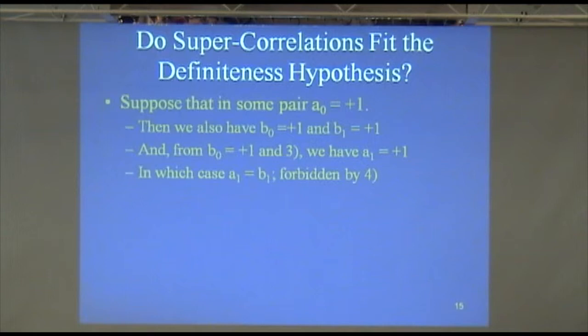If definiteness is true, it's got either the plus 1 or minus 1 value, so suppose it's plus 1. Well then, that means Bob's B0 value, or in the 0, 0 case, it's got to be plus 1.